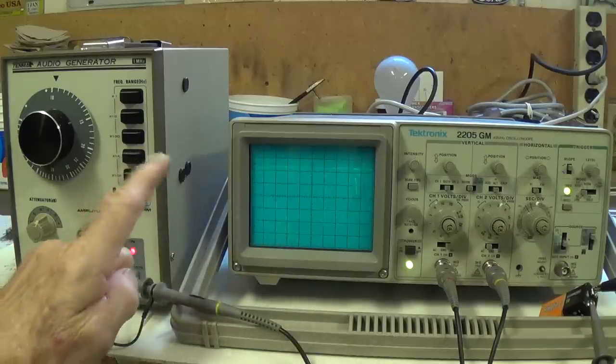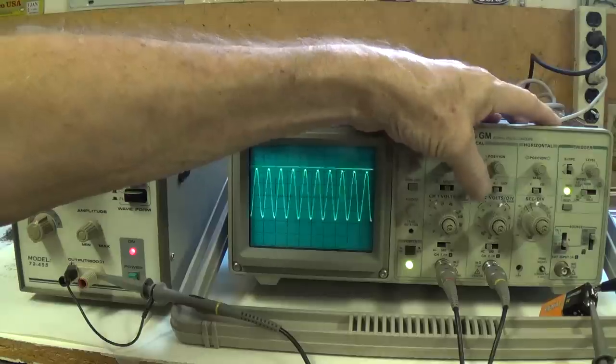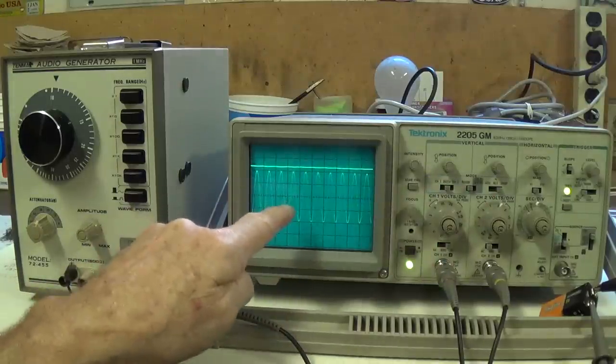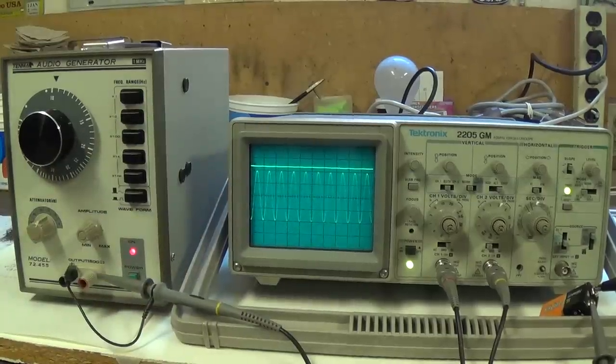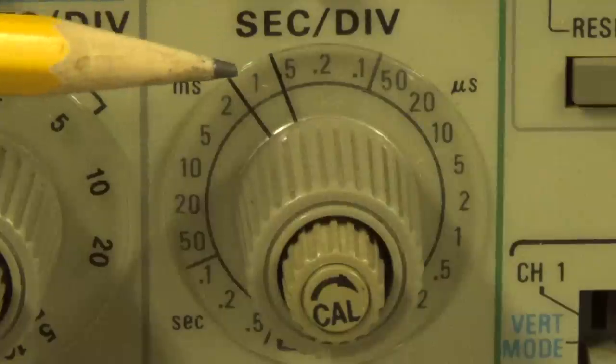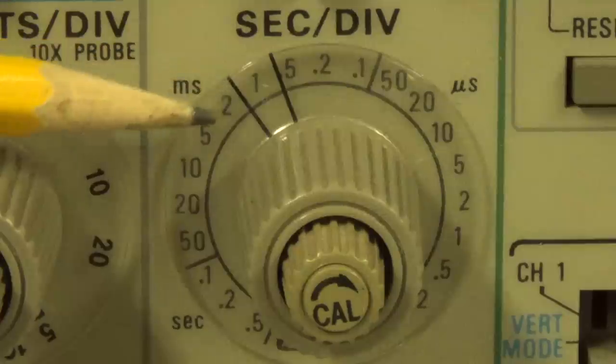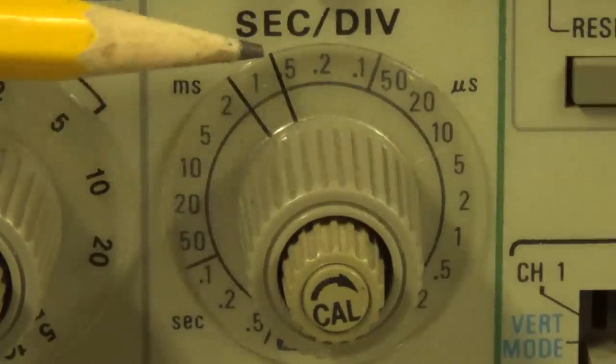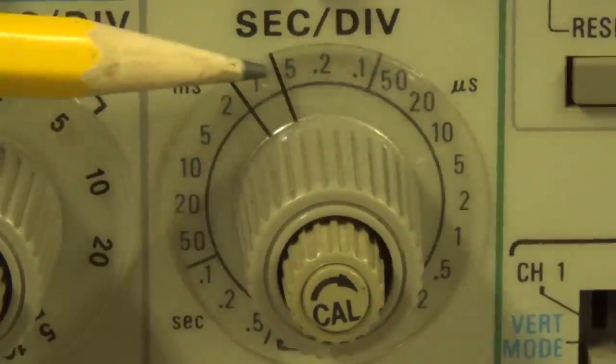One thousand cycles per second is very low frequency, and the DC has no frequency, so to stabilize this scope image we go to chop. Chop is for low frequency simultaneous display of two different waveforms. In fact, a good rule of thumb is if your seconds per division control is at one millisecond or greater, you will use chop. And if it's at 0.5 or shorter, then you'll use alt.